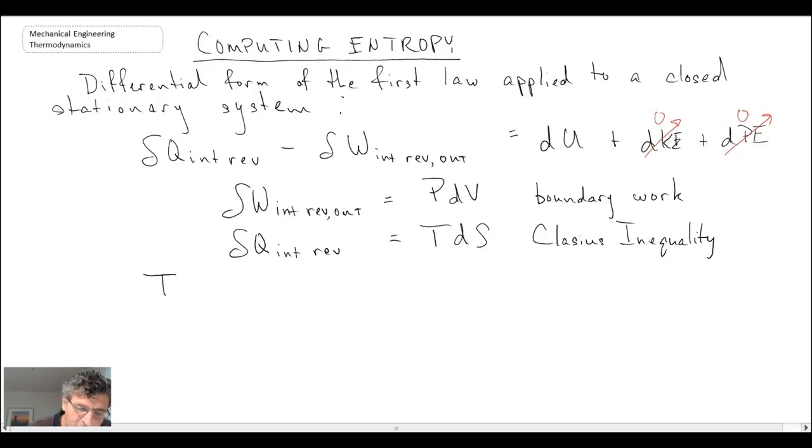So substituting in the heat using the Clausius inequality and then the boundary work, we result in this equation for our first law. What I'm going to do now, notice that these are capital S, capital U, capital V. This is not per unit mass. So in order to make it per unit mass, I'm going to divide by the system mass.